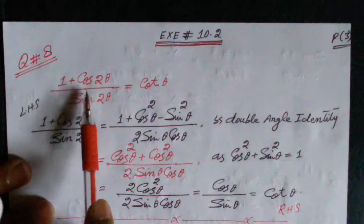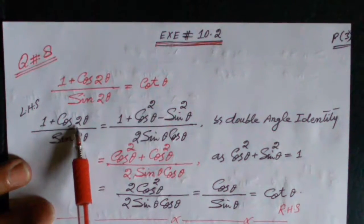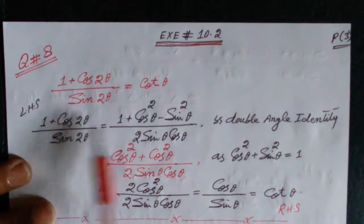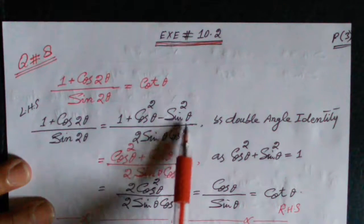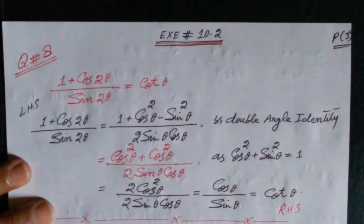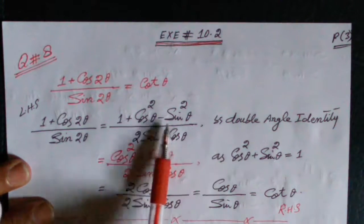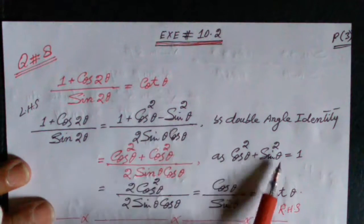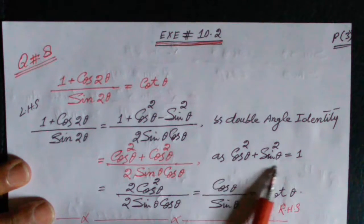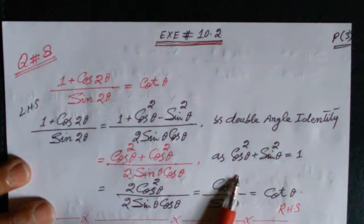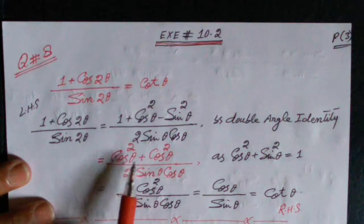We have to convert 2θ into θ — the target is θ — so we expand using the double angle identity. Now rearrange: 1 minus sin²θ is equal to cos²θ from the fundamental trigonometric identity, so replace 1 minus sin²θ by cos²θ.